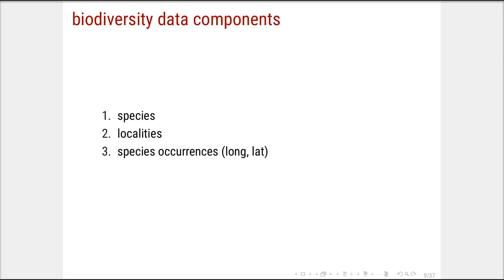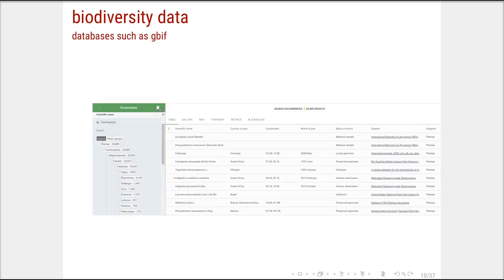Biodiversity data has three components: species, localities, and species occurrence data — which combines both, providing information of a particular species at a particular longitude and latitude. Looking at GBIF data for the same legume dataset, we can see different variety and resolution. We can have species data without coordinates, data at family level with coordinates, and different species with or without coordinates.